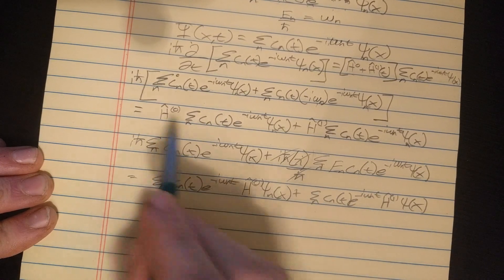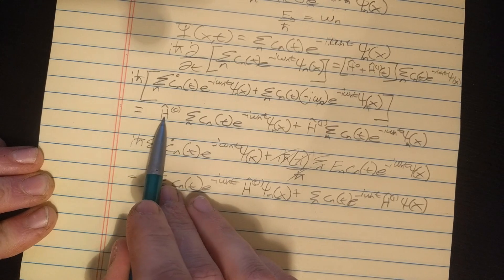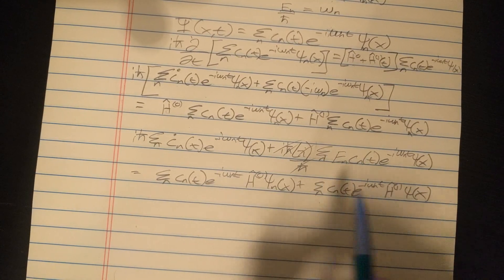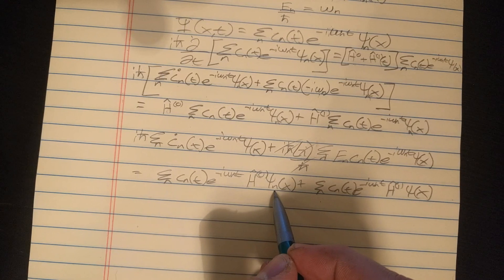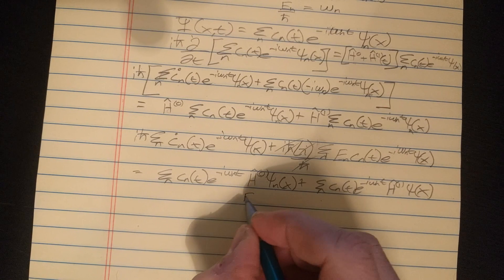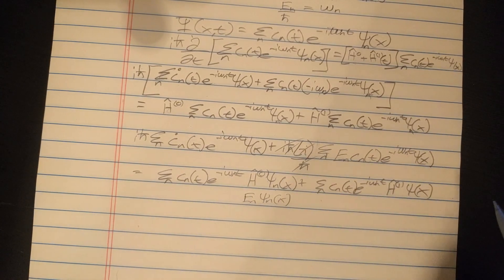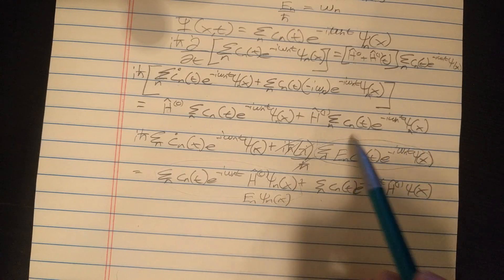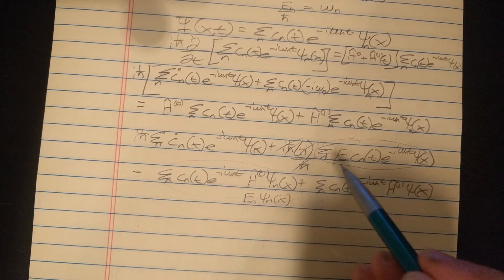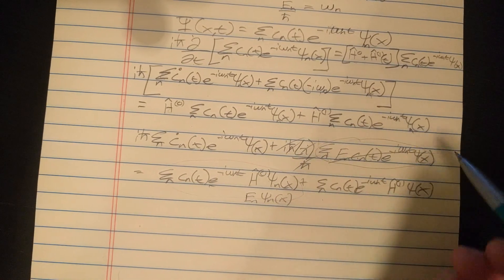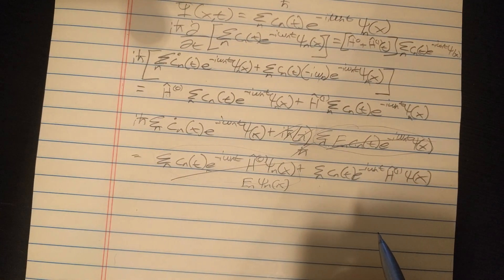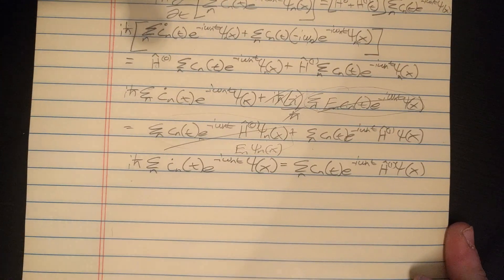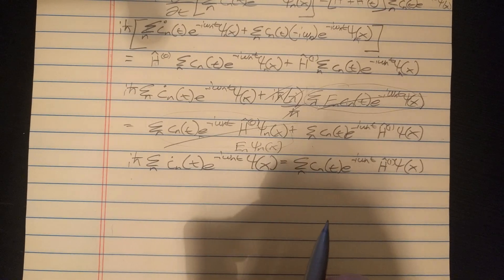And now what we're going to do is distribute this i h-bar and I'm going to rewrite this omega n with the e as E over h-bar. So on this side I distributed the i h-bar and as we can see, the h-bars are going to cancel. And you can rewrite negative i as 1 over i, so the i's are going to cancel.